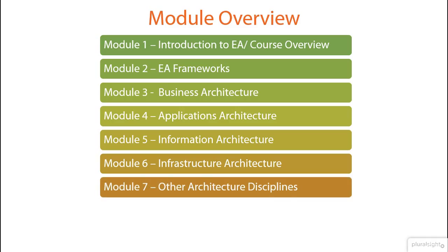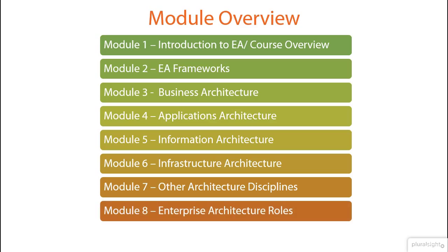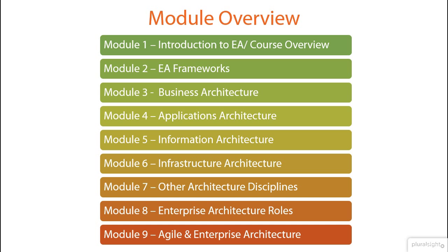Having covered the key domains of enterprise architecture between modules 3 to 6, module 7 covers some of the other specialized architecture practice areas emerging within the enterprise such as cloud, big data and social enterprise. Module 8 offers guidance on architecture roles within the enterprise from the perspective of their scope of responsibilities, what outcomes and supporting artifacts they work with, who they typically interact with, and what value each of the roles has to offer. Module 9 explores the role of enterprise architecture practice in the emerging turbulent business environments and how the practice contributes towards enterprise agility, while at the same time how it itself is evolving from the traditional ivory tower practice to being a collaborative, hands-on and agile practice that supports enterprise-wide innovation.